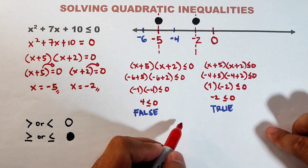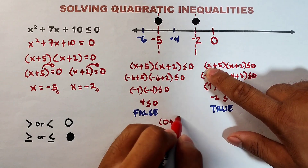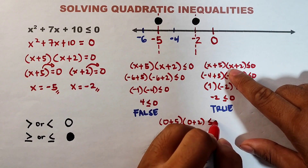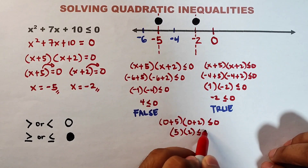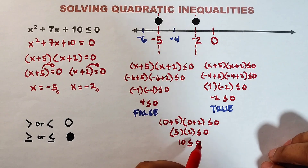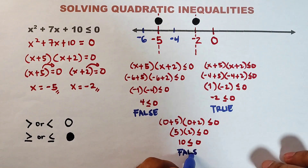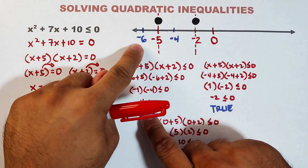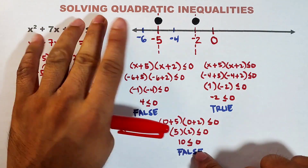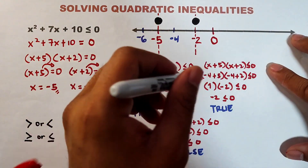Now let's use x = 0: (0 + 5)(0 + 2) ≤ 0 gives 5 × 2 = 10 ≤ 0. Is this true or false? This one is a false statement because 10 is greater than zero. Since the left region (x = -6) and the right region (x = 0) are both false, we do not draw the line there. The only true region is the middle one.